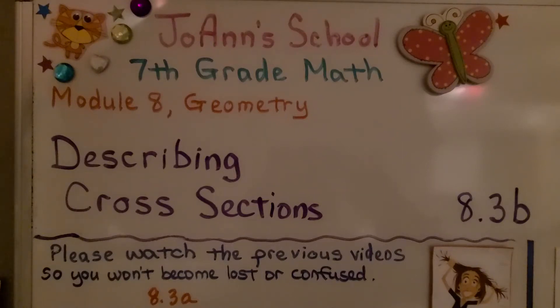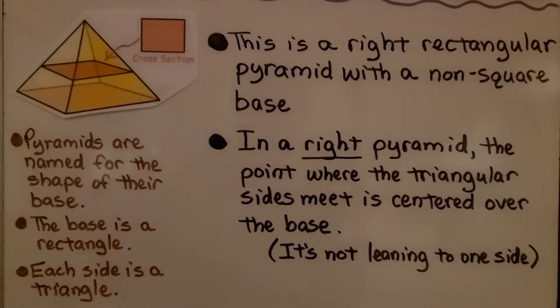8.3b Describing Cross-Sections. This is a right rectangular pyramid with a non-square base. In a right pyramid, the point where the triangular sides meet is centered over the base. It's not leaning to one side.